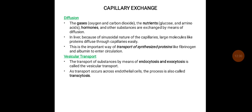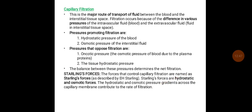Vesicular transport is the transport of substances by means of endocytosis and exocytosis. As transport occurs across the endothelial cells, this process is also called transcytosis. Capillary filtration is the major route of transport between the blood and the interstitial tissue space. Filtration occurs because of differences in the pressures of the intravascular and extravascular fluid. The pressures that promote filtration are the hydrostatic pressure of the blood and osmotic pressure of the interstitial fluid, while pressures that oppose filtration are oncotic pressure and tissue hydrostatic pressure. The balance between these pressures determines the net filtration.